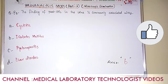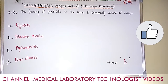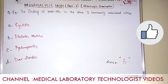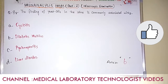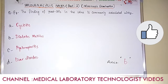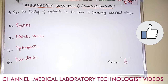Question number 8. The finding of yeast cells in urine is commonly associated with. Option A: cystitis. Option B: diabetes mellitus. Option C: pyelonephritis. Option D: liver disorders. The answer is option B, diabetes mellitus. In those patients, yeast cells are commonly found in their urine.